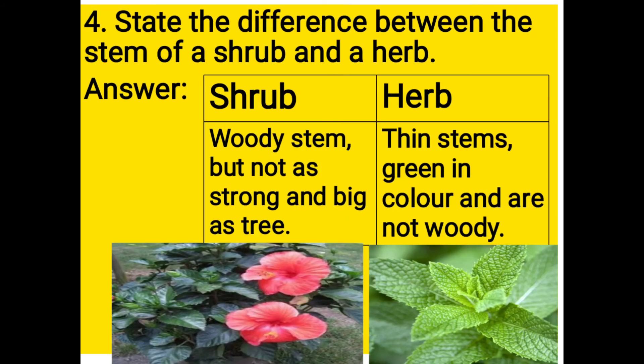Question number 4: State the difference between the stem of a shrub and a herb. Answer: Shrub stem — woody stem, but not as strong and big as a tree. Herb — thin stems, green in color, and are not woody.